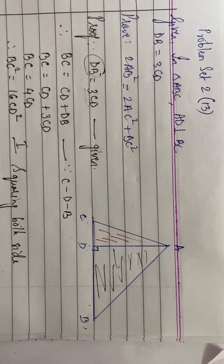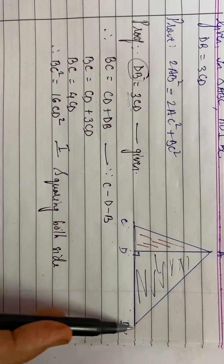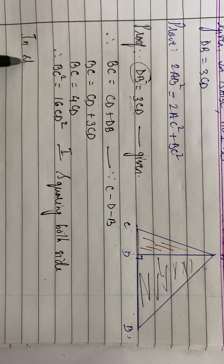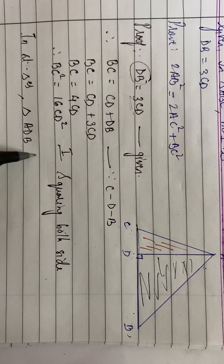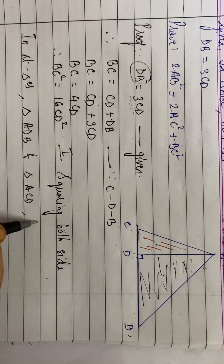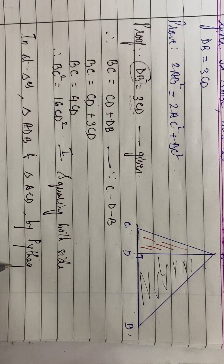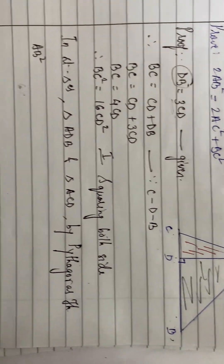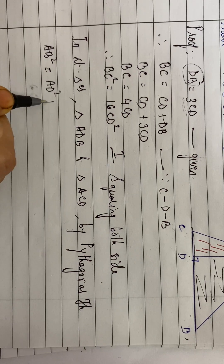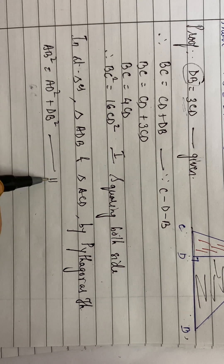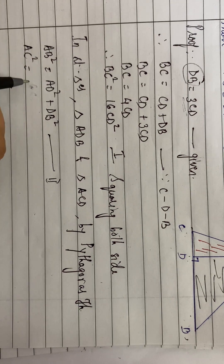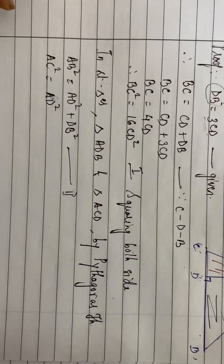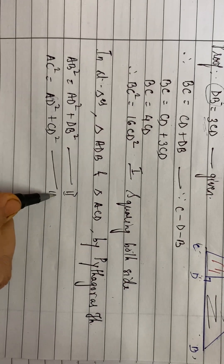Call that equation number 1. Now, applying Pythagoras theorem to the two right triangles — triangle ADB and triangle ACD — we get: AB square equals AD square plus DB square (equation 2), and AC square equals AD square plus CD square (equation 3).